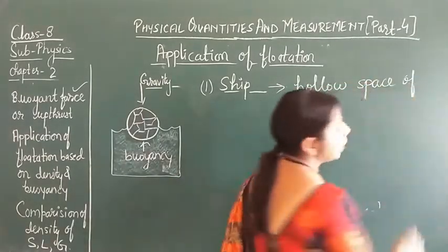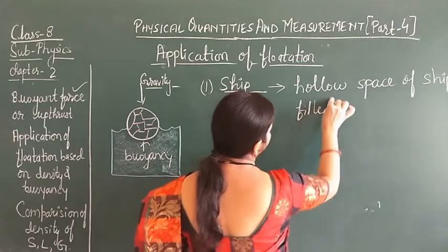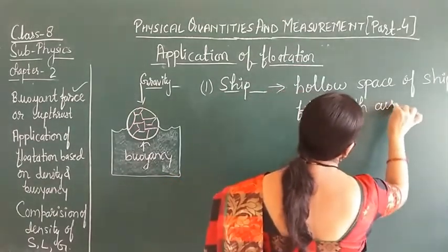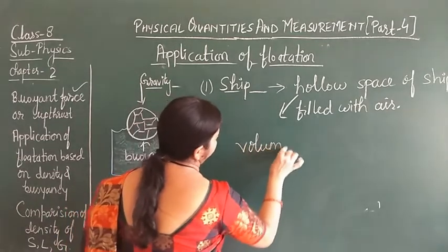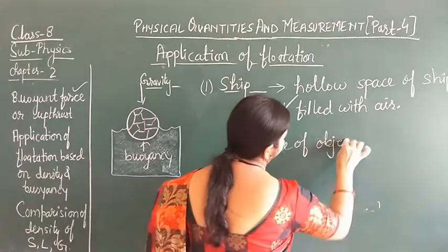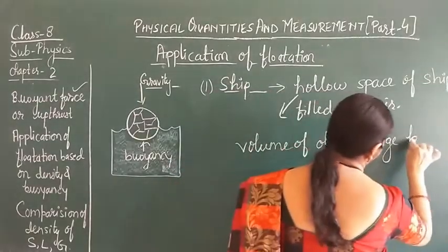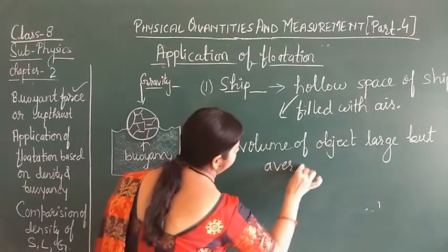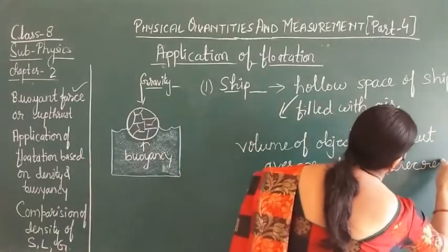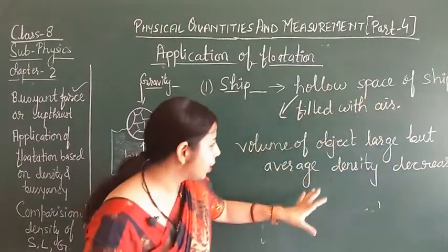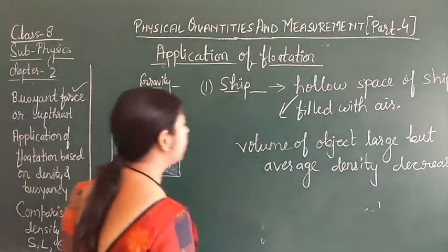This happens because of the hollow space. The hollow space of the ship is filled with air. Because of this hollow space, the volume of the ship is large but the average density is decreased. The average density decreases because of the hollow space, so the average density becomes less than that of the fluid, and that is why the ship can easily float on the water.